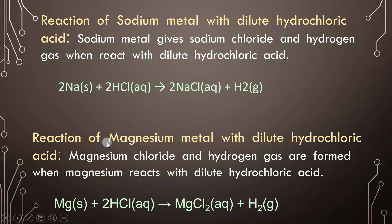Reaction of magnesium metal with dilute hydrochloric acid: magnesium chloride and hydrogen gas are formed. The equation is: Mg + 2HCl → MgCl₂ + H₂.